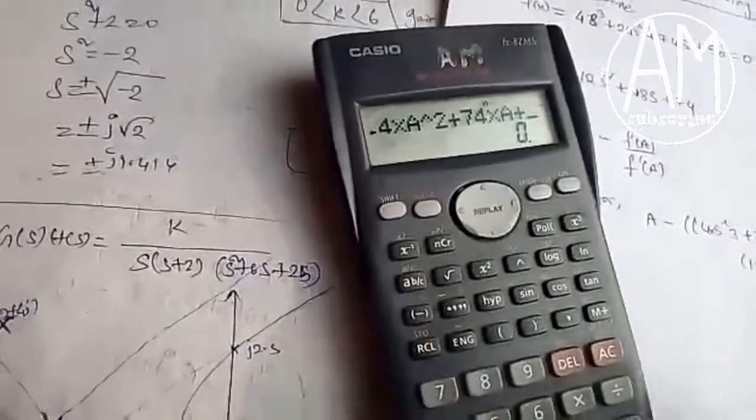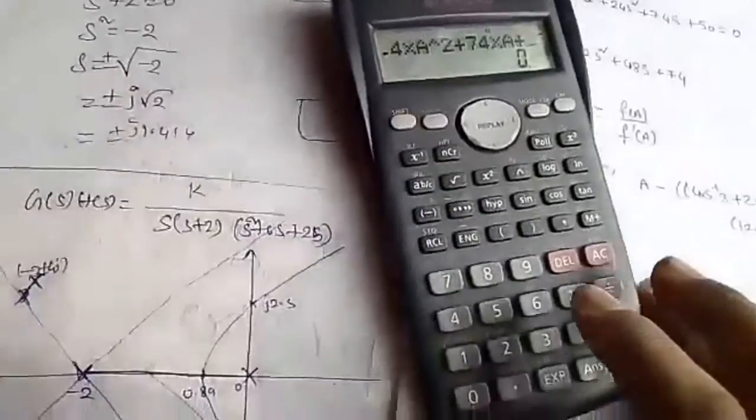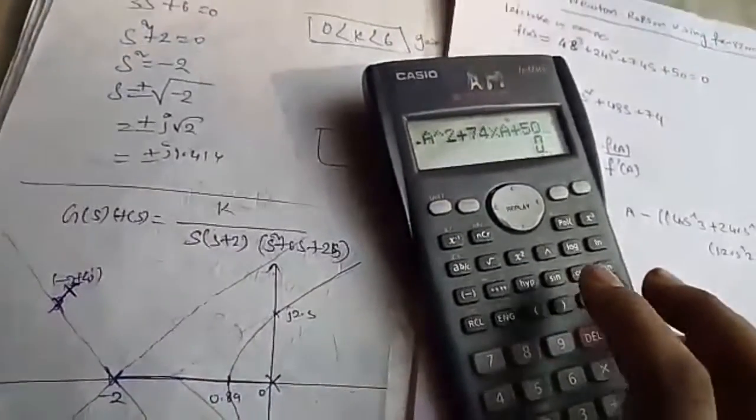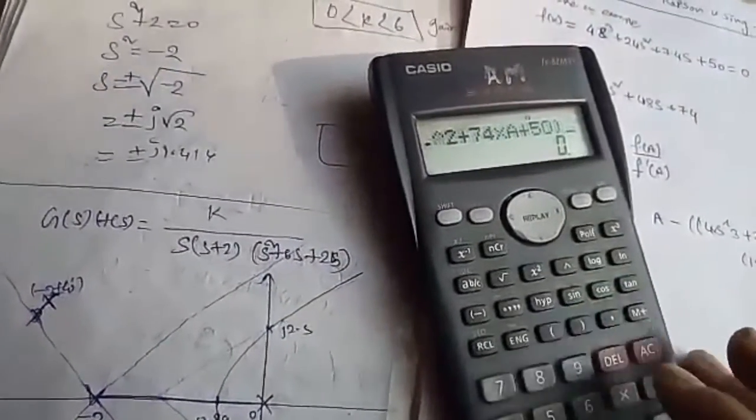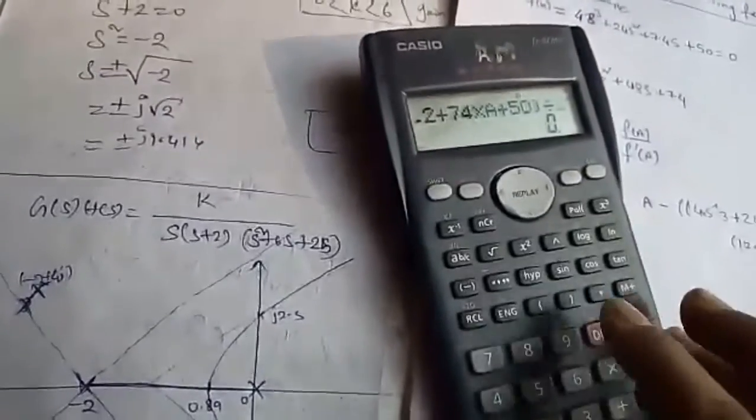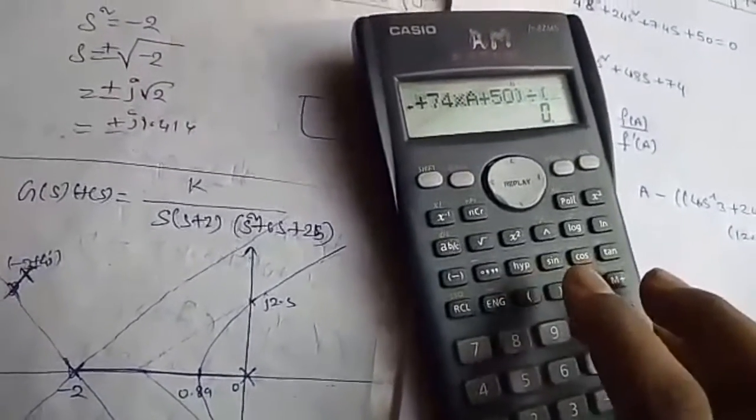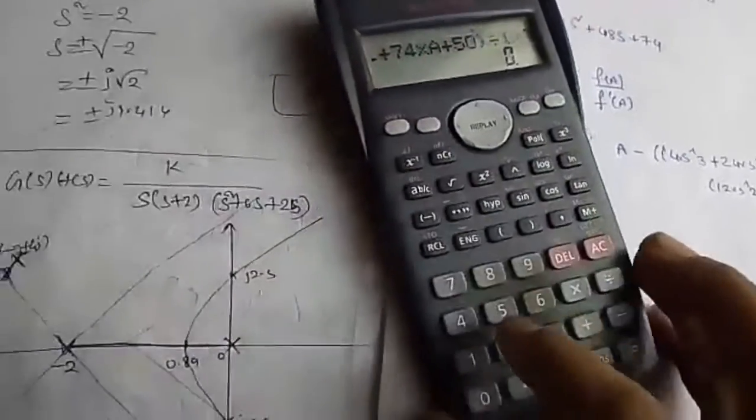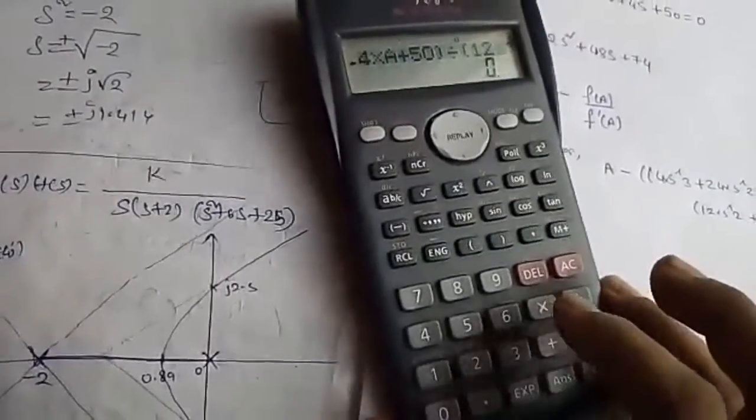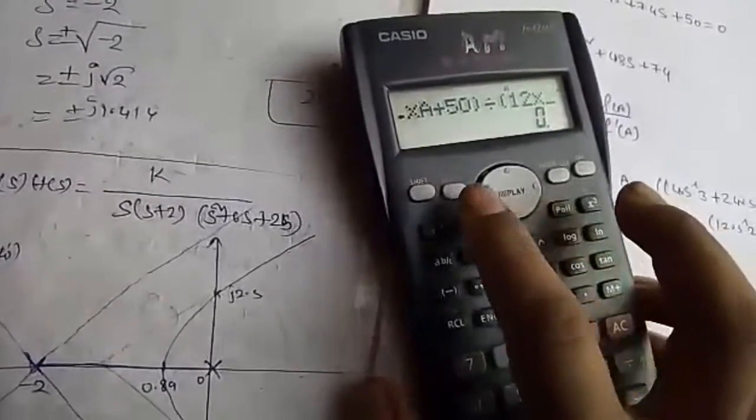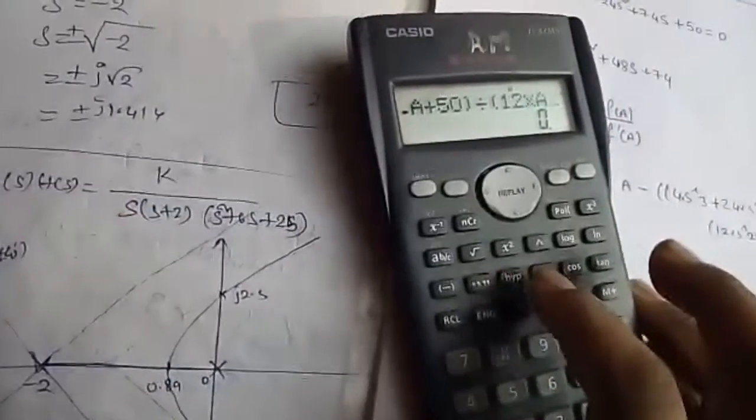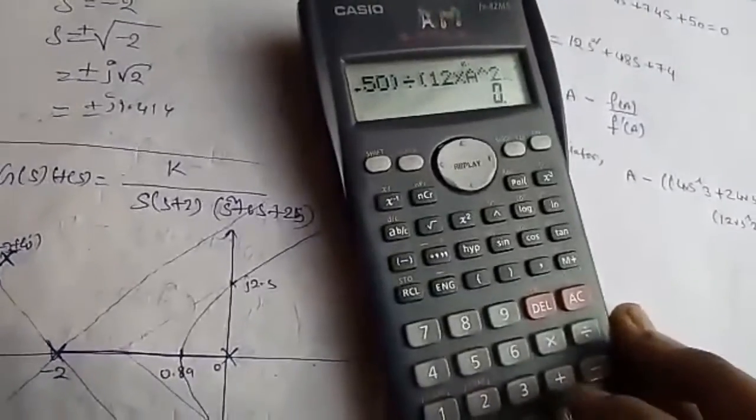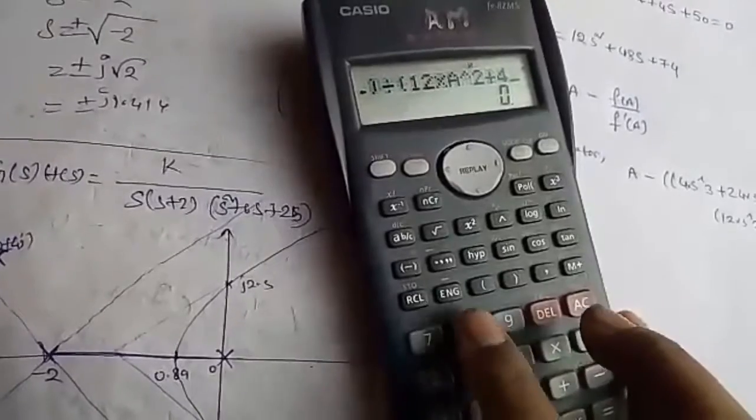Plus 50, then close this bracket, divide, then open a bracket and put 12 into A to the power 2 plus 48 into A.